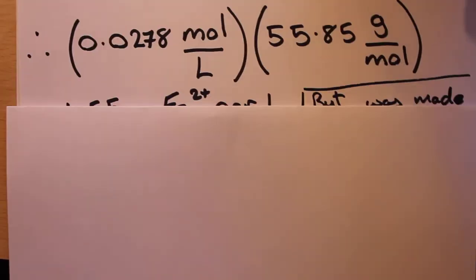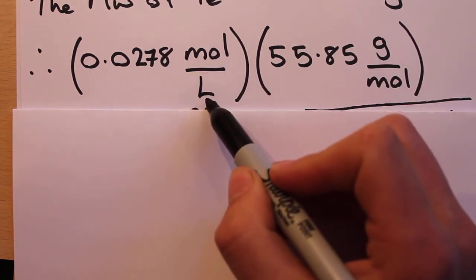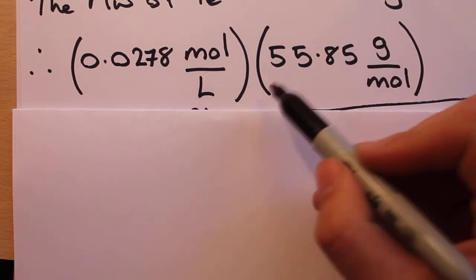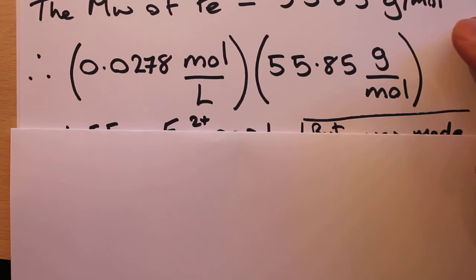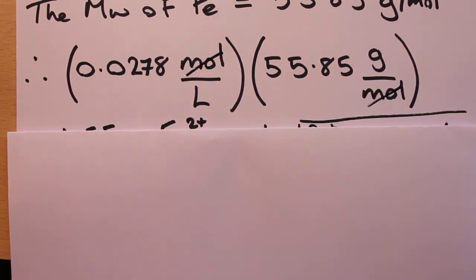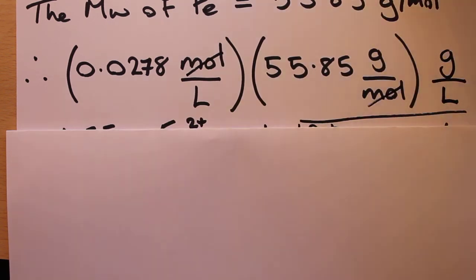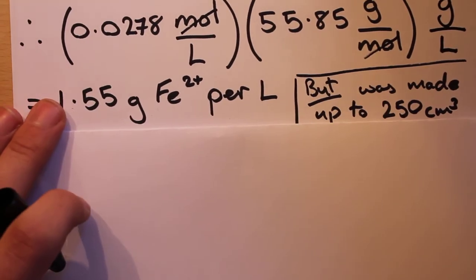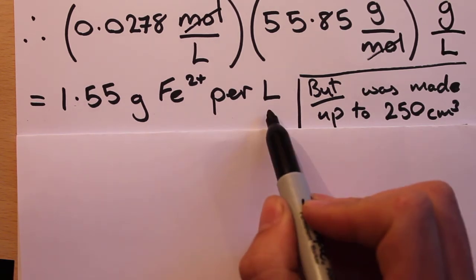To convert, we multiply our 0.0278 moles per liter by 55.85 grams per mole. The units tell us exactly what to do — the moles cancel out, leaving us with grams per liter. This equals 1.55 grams of iron per liter.